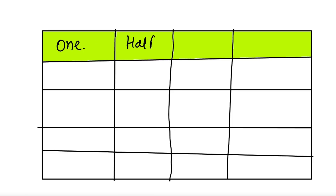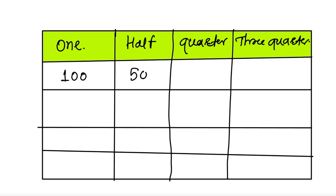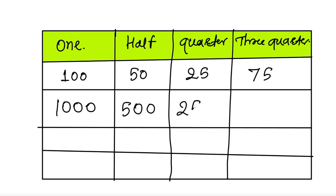So here: one whole. Then half, quarter, and three-quarter. If we take the number hundred — half means fifty, quarter means twenty-five, the sum of half and quarter is seventy-five. It's quarter: two hundred and three-quarter: seven hundred fifty.